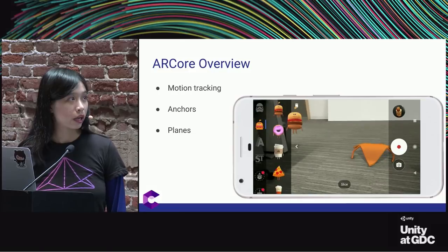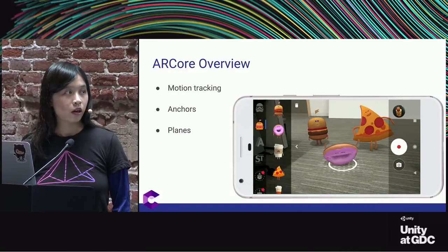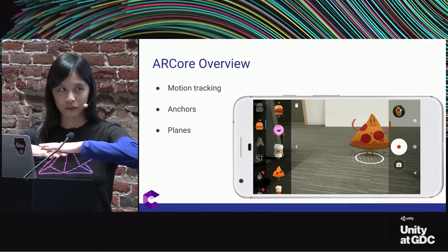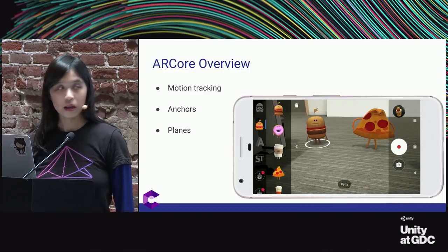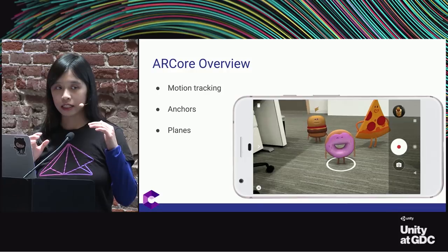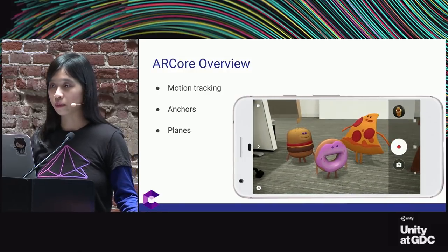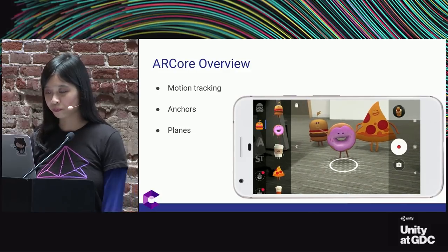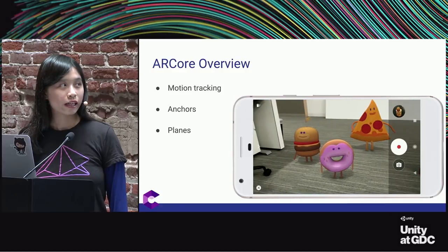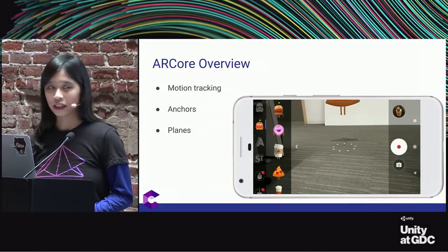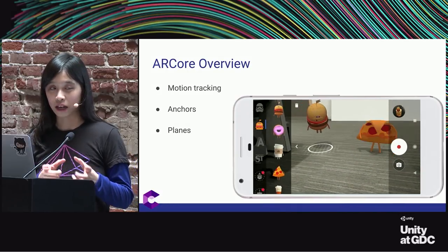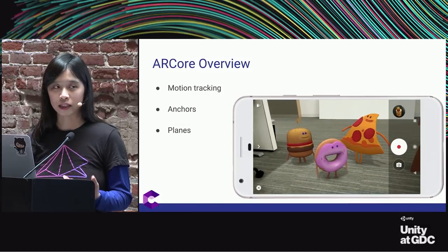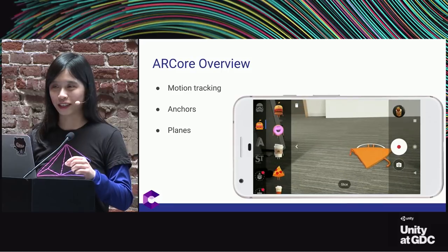ARCore understands horizontal planes — anything from a table to a floor — and knows the boundary of the floor it detects, with horizontal x and z extents. Planes can merge with others; if you detect a portion of the floor and then a separate portion, over time these will merge into one. It's important to note that ARCore is good at tracking textured surfaces, much like the human eye. Things like white walls or glossy surfaces will be difficult for ARCore to identify.